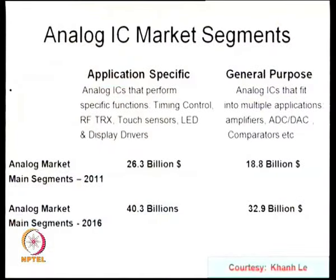Application-specific analog ICs perform specific functions like timing control, RF transceivers, touch sensors, LED drivers, LED controllers, and display drivers. General purpose ICs cover multiple applications: amplifiers, DACs, ADCs, comparators, latches, and sense amplifiers — they do not target a single system. In 2011, the application-specific market was 26.3 billion dollars and the general purpose market was 18.8 billion.